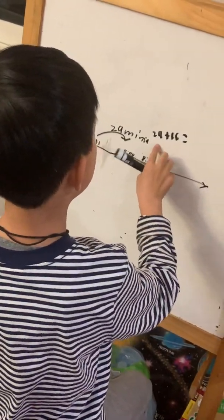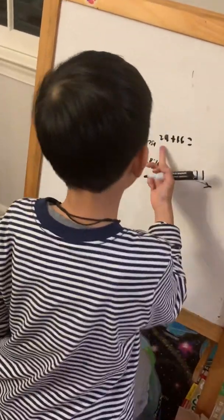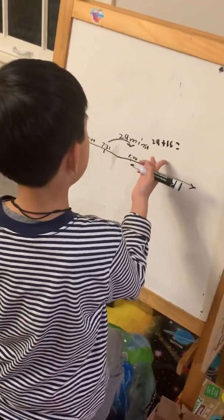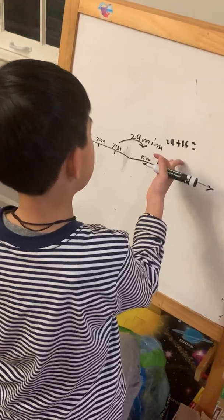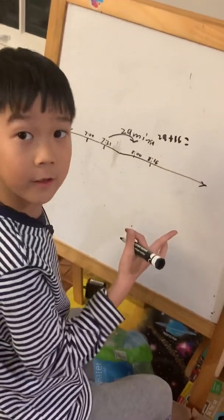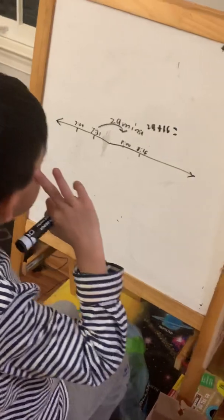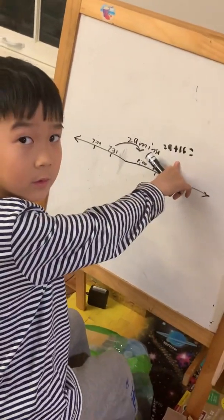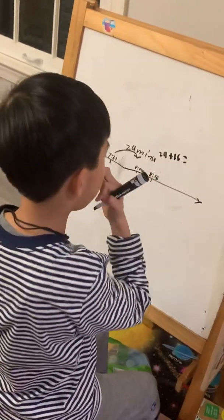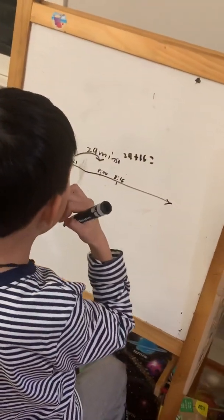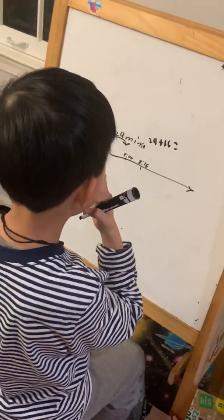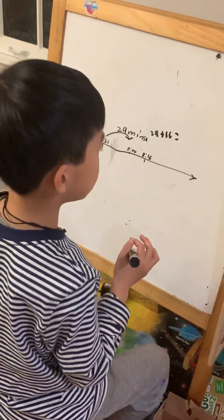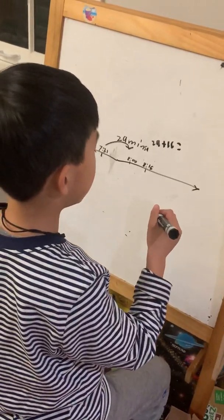29 plus 16. So 29 plus 6 equals 35, plus 10 equals 45.